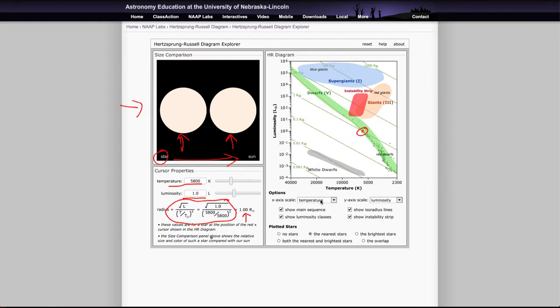You can also look at some of the stars that you're plotting. You can plot just the nearest stars - these are the nearest stars to the Sun. Or you can plot the brightest stars. You can see that there's quite a difference between those, and you can also plot them both together to really see the differences. If you look for the overlap you'll see that there isn't very much, just a few stars.